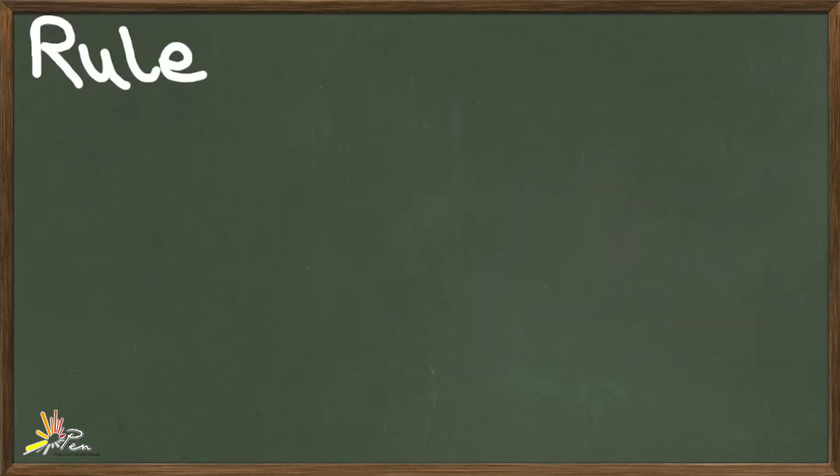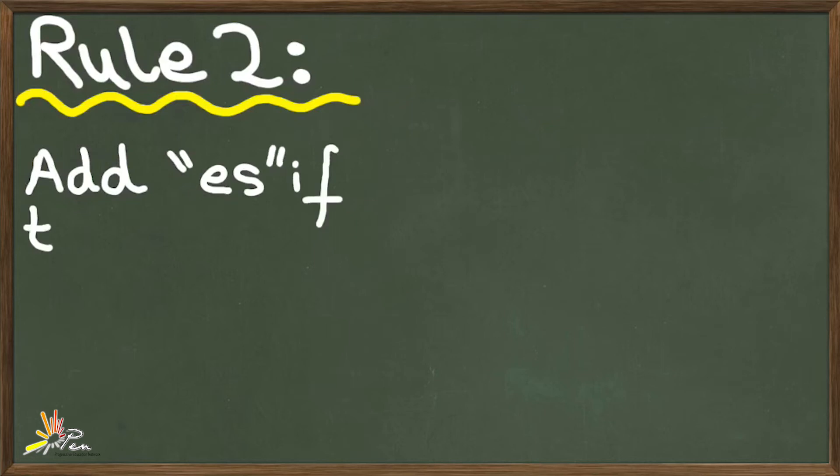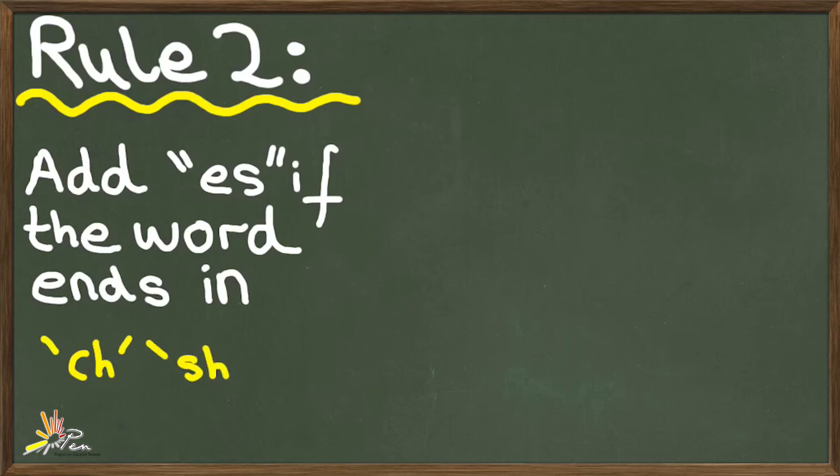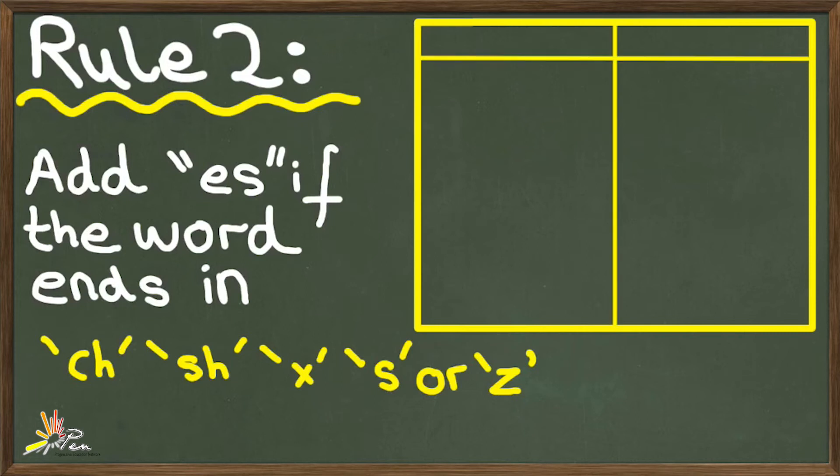Let's move on to rule number 2. We add ES if the word ends in CH, SH, X, S, or Z. Here are some examples.